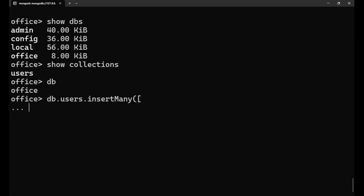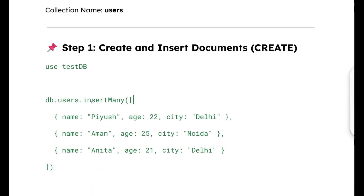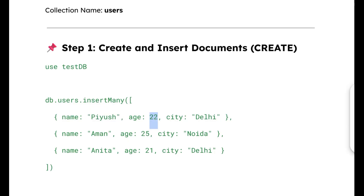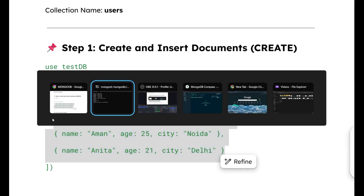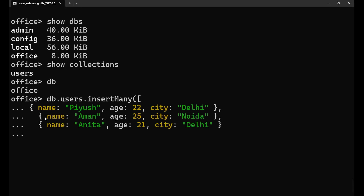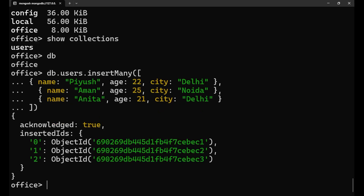Put an open square bracket and go to the next line. I'm going to put all these different data documents — I have three different data documents. Each is in the form of a curly bracket with key-colon-value pairs. String values are inside apostrophes; for integers, no quotation marks are needed. Let's copy all three and paste them inside the insertMany. Then close the square bracket and the parenthesis and press enter.